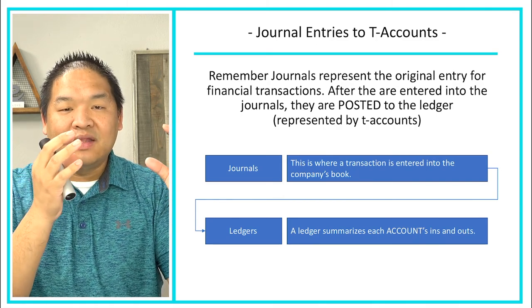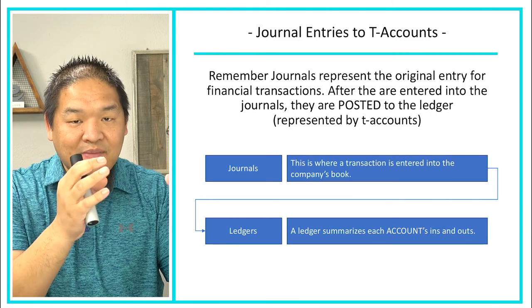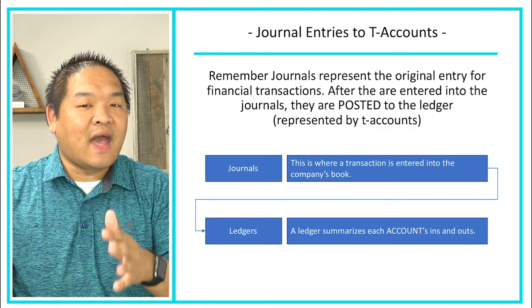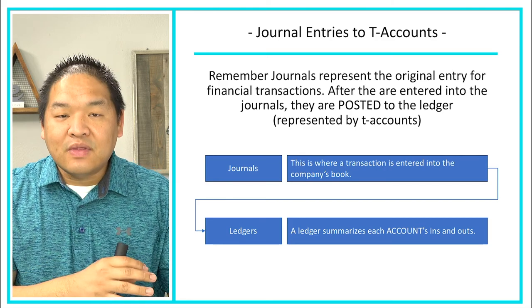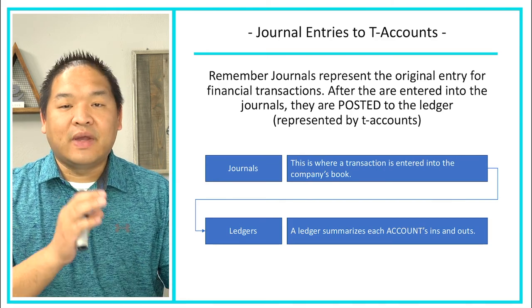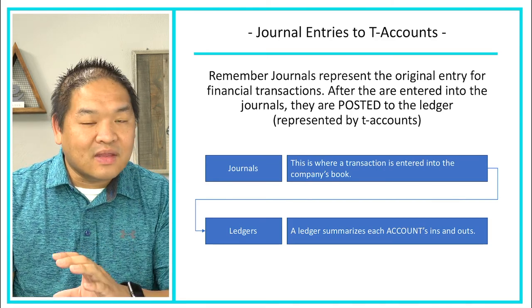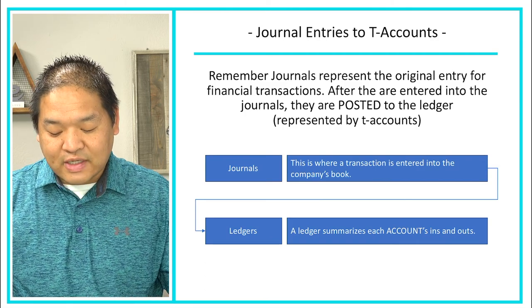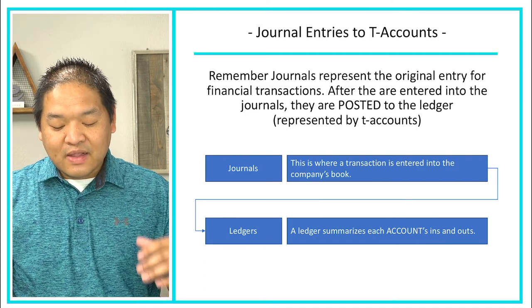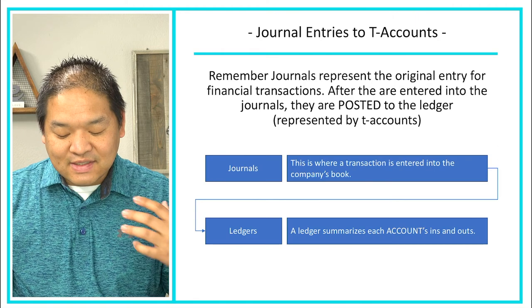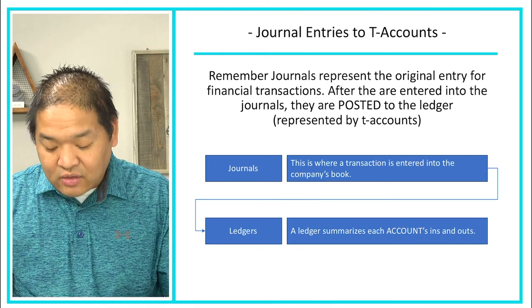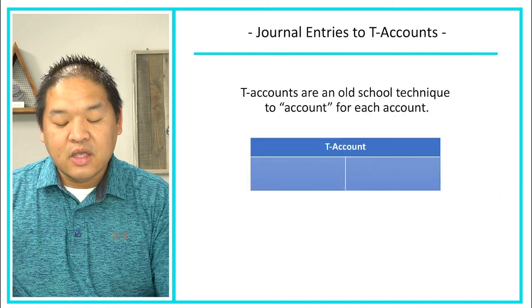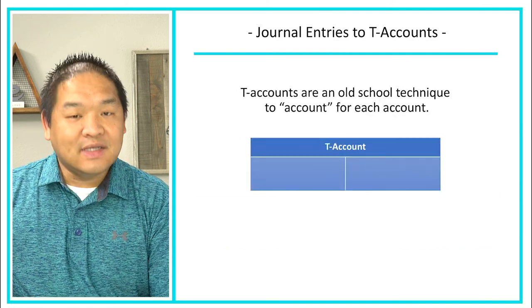We have to debit the cash — we have to post that debit to cash to the actual cash ledger or the cash T-account. Same thing for the accounts receivable. So journals are where transactions are entered in the company's books. The ledger is a summary of each account's ins and outs, and we're going to show you them using the T-account.